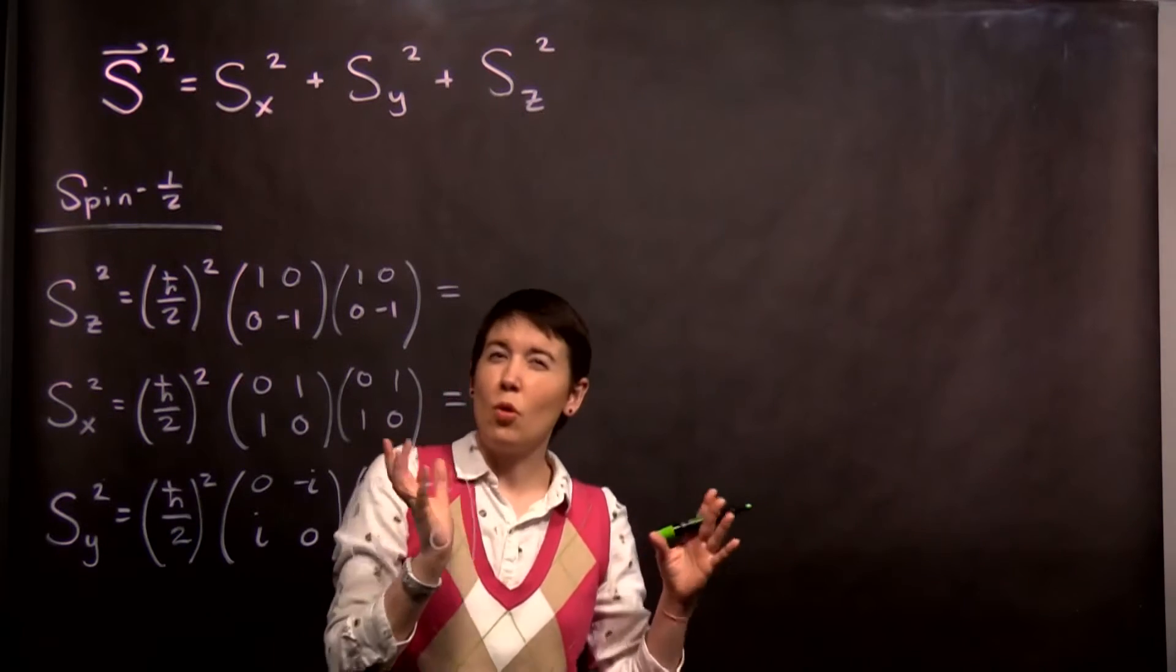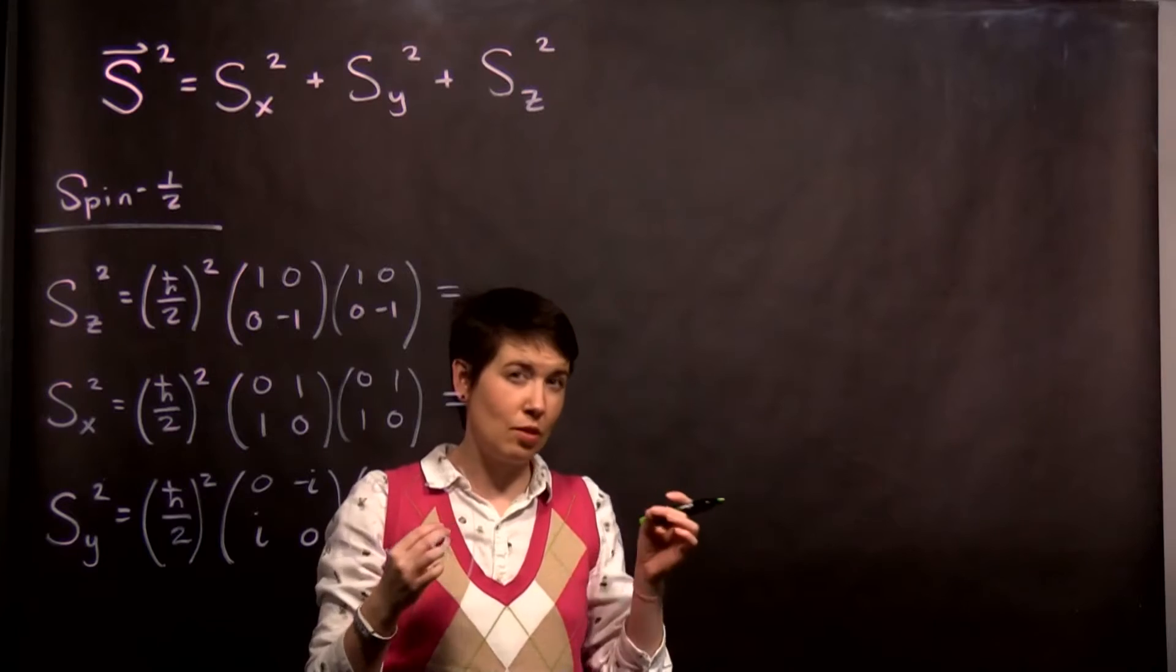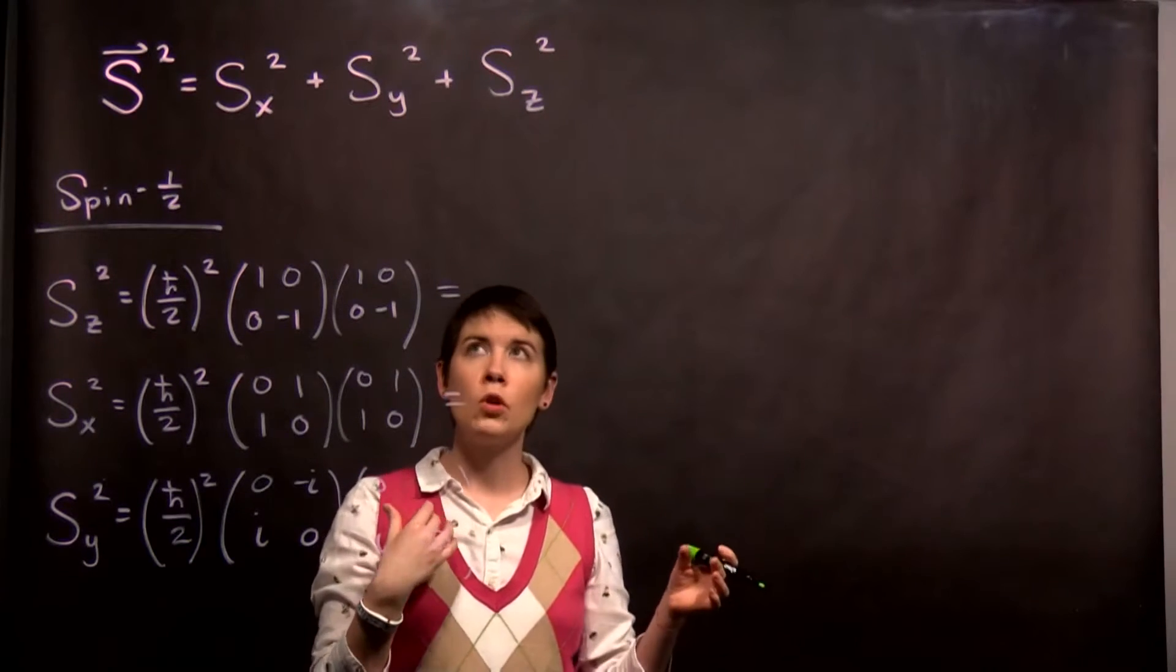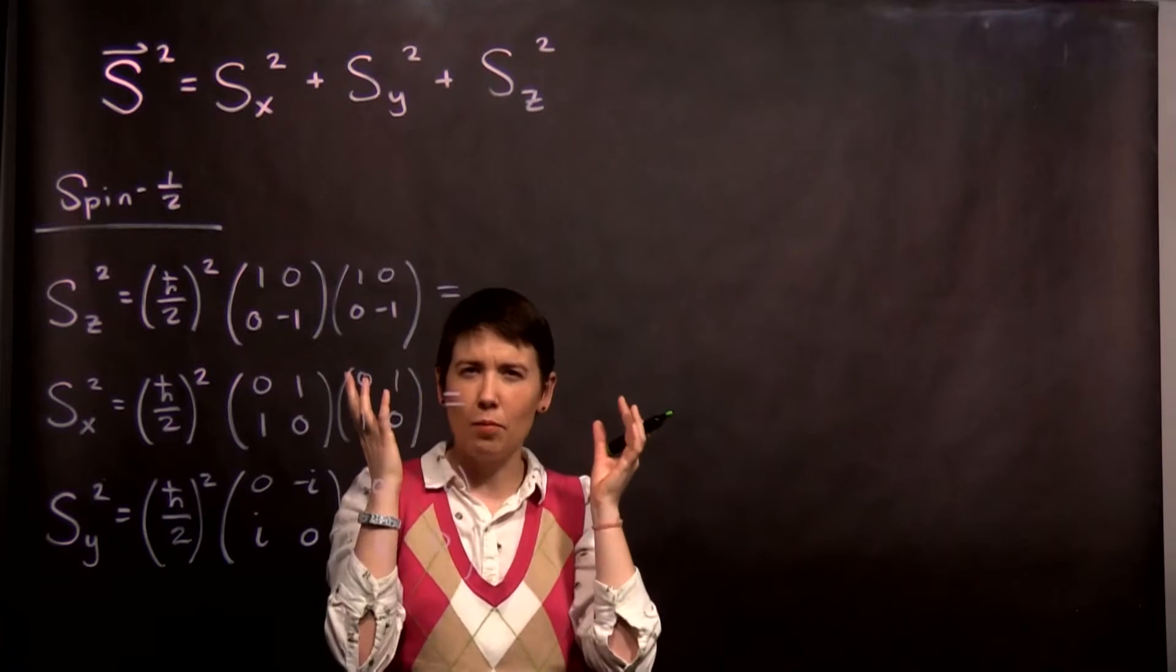Like, it doesn't quite work that way because spin isn't a physically three-dimensional vector, the way we think about like a position vector. But you can think of it kind of like a magnitude.